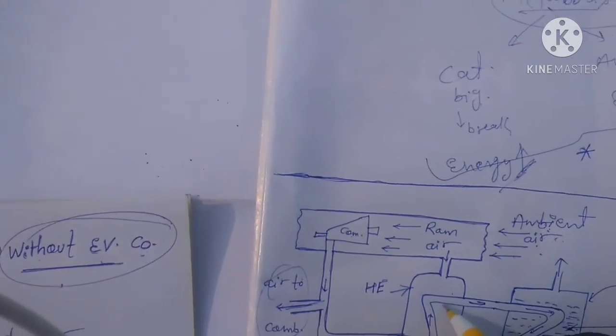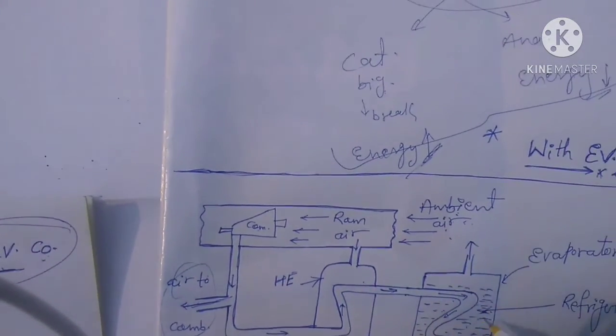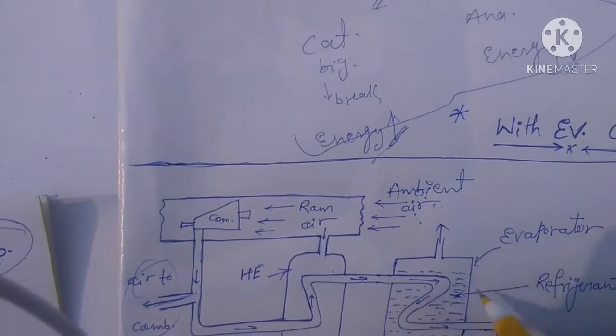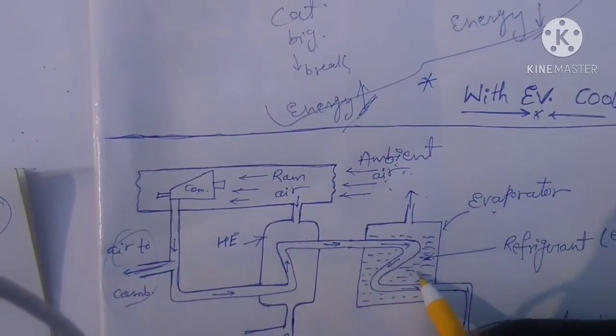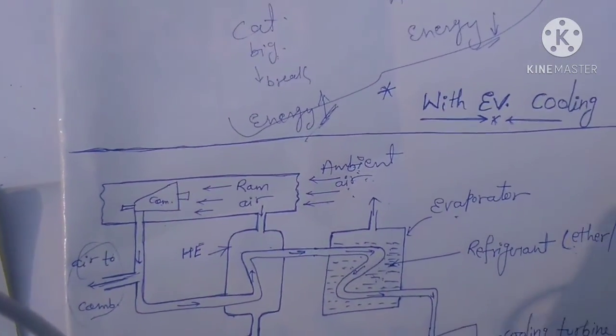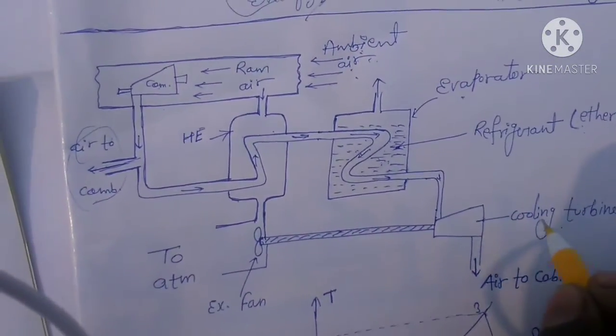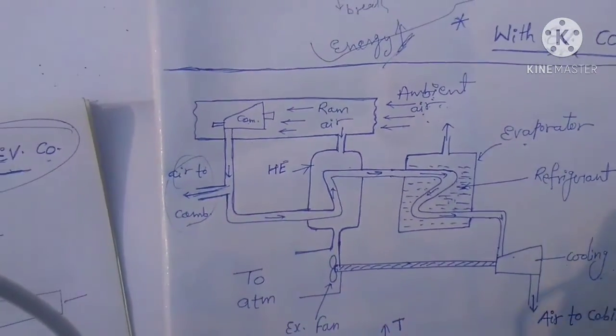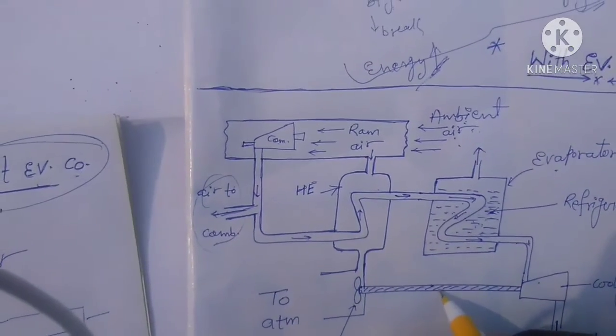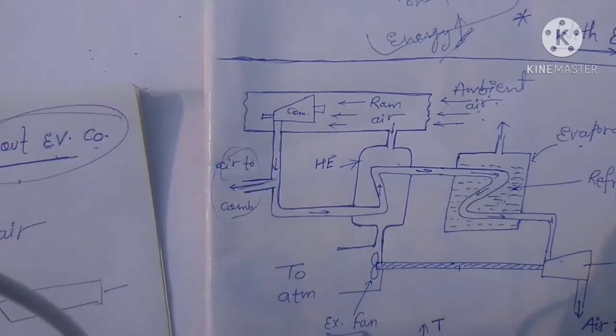Then for lowering temperature it goes into the evaporator. The evaporator has refrigerant - ether or liquid nitrogen. After that it goes to the cooling turbine, and the cooling turbine is connected to a shaft to drive an exhaust fan.